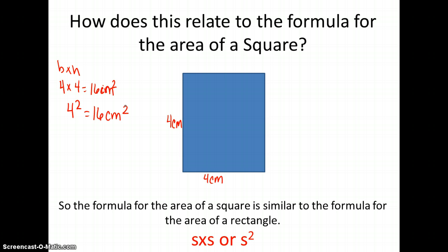I can use my knowledge of exponents to rewrite this problem as 4 squared, which still gives me 16 centimeters squared. So the formula for the area of a square is side times side. I don't need two different variables b and h, because both sides are the same — so I can say s times s, or s squared. Write and label this formula in your summary in a different color, or highlight or circle it.